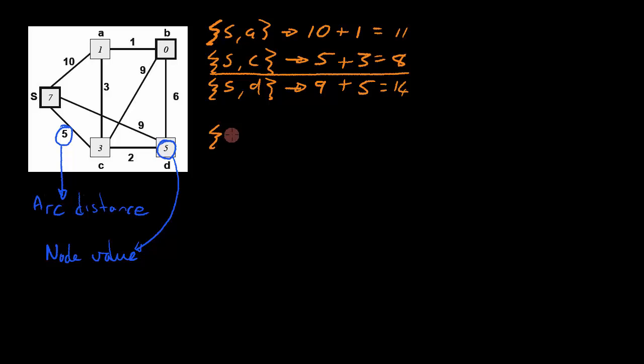So for the second step it's S, C and node A; S and C and node B; S and C and node D. Those are the three paths that we now need to explore. In order for us to calculate the distance value for each one of these paths, we add the arc distances between the nodes as well as the node value of the last node.